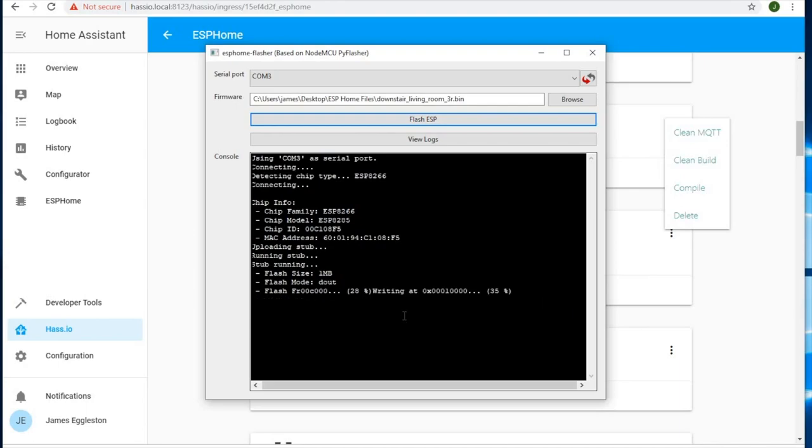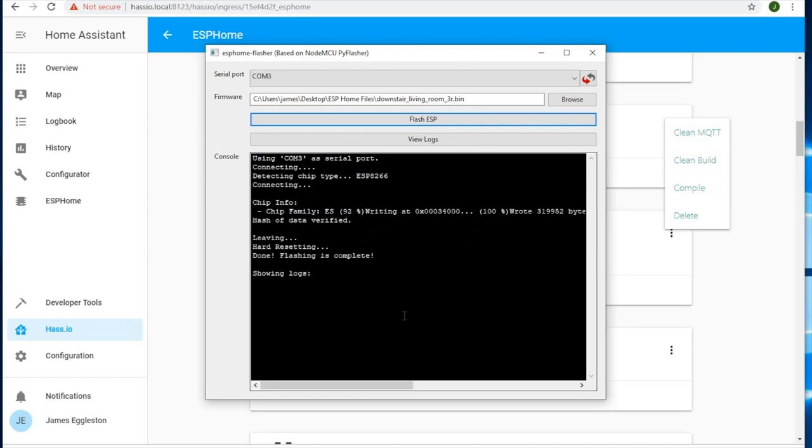And that just flashes the program to our relay module. And of course once that's flashed on there, any further updates we want to do we can do over the air. So you don't have to have it fully set up. We just have to have the WiFi credentials in there. And then you can add anything you want to and then you can do it later through the ESP home interface. So that's all done. We can unplug our relay. And we can move on to the next section.